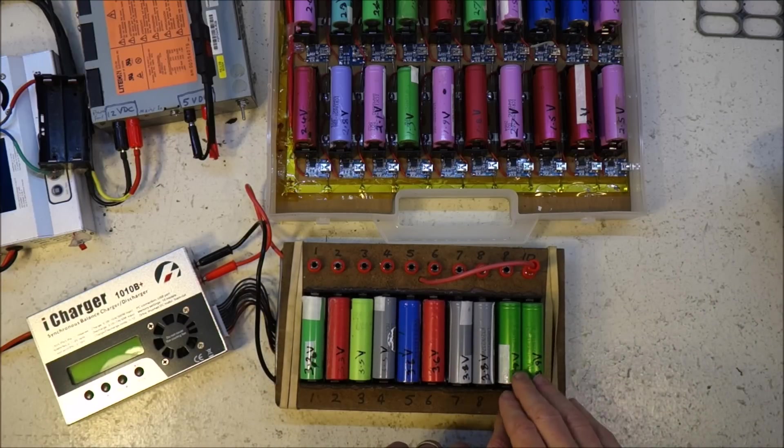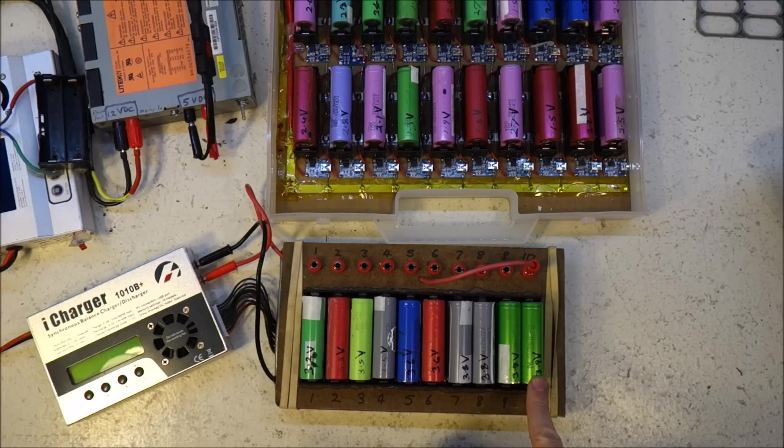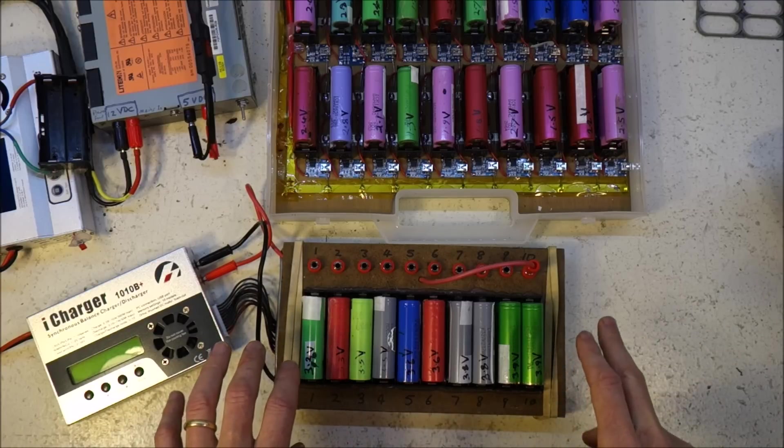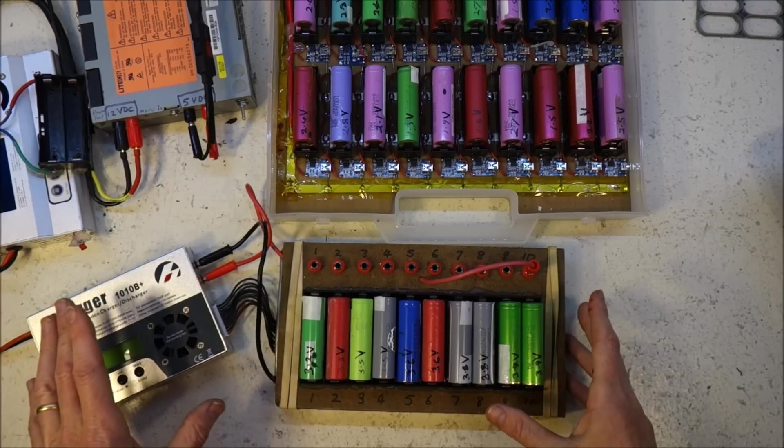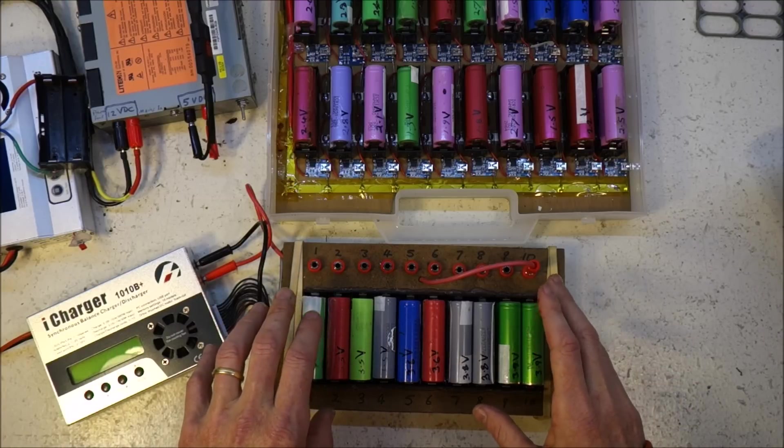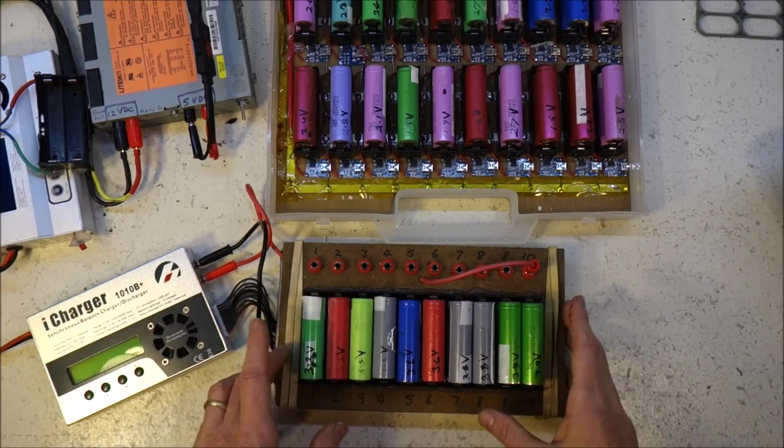But the first cell that reached 4.2 is charging all of those at really low current through the balance wires. So that is why balance charging can be agonizingly slow.